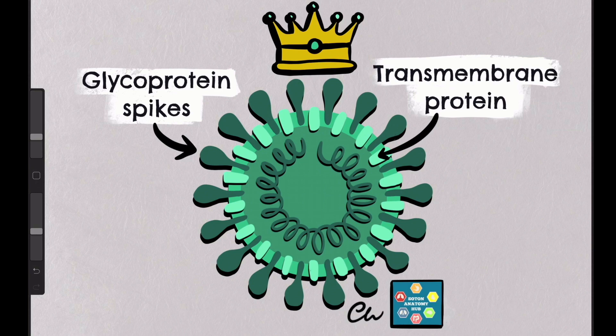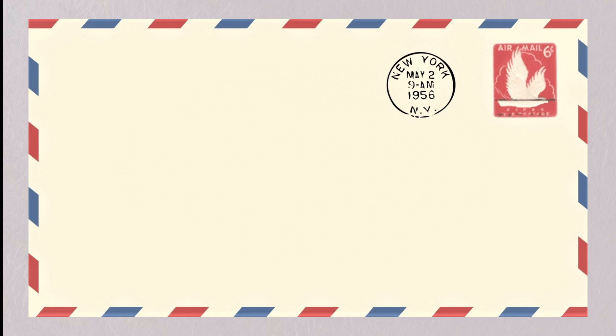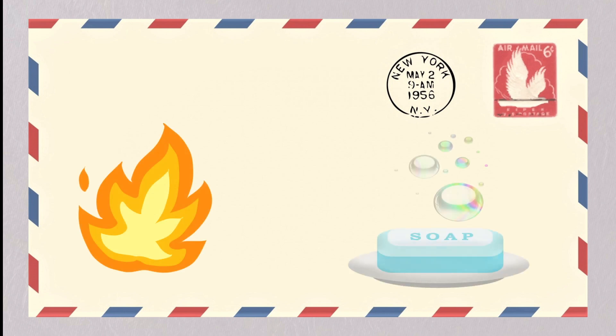This membrane around the coronavirus is made mainly of phospholipids from cells it has killed, like some kind of weird trophy, which classifies it as an enveloped virus. Thankfully, this makes this particular kind of virus susceptible to heat and soap, making coronavirus easier to deactivate than some non-enveloped viruses.